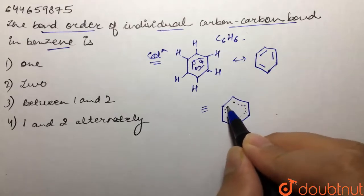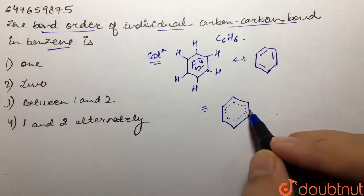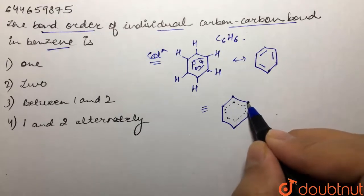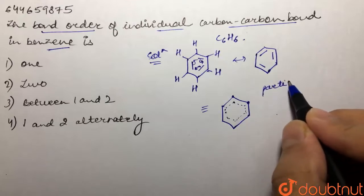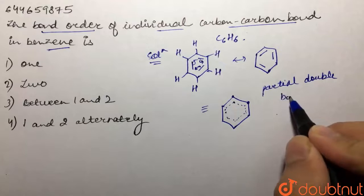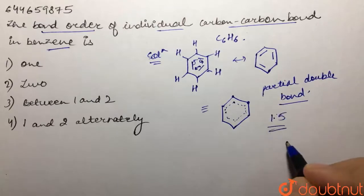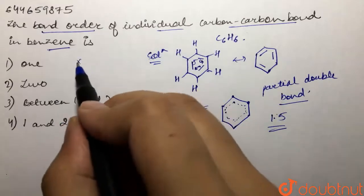So we can draw its resonance hybrid, which shows a partial double bond character. This arises due to resonance. Every carbon-carbon bond in benzene has a partial double bond character. Partial double bond character means the bond order is 1.5.